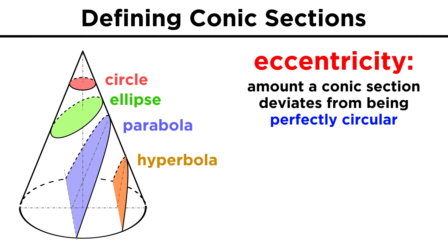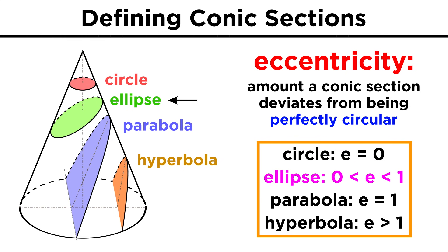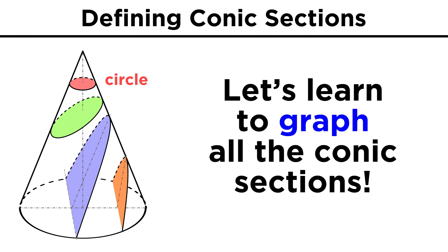We can also describe these using a parameter called eccentricity, which is a term that describes how much a conic section deviates from being perfectly circular. For a circle, this value is zero. For an ellipse, it's between zero and one. For a parabola, it's precisely one, and for a hyperbola, it's greater than one. Let's learn how we can graph these different figures one at a time, starting with circles.